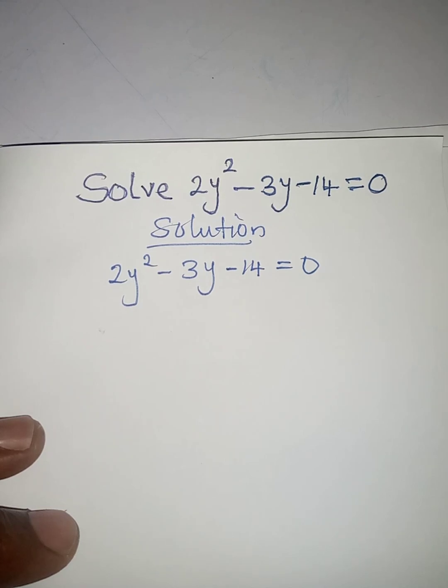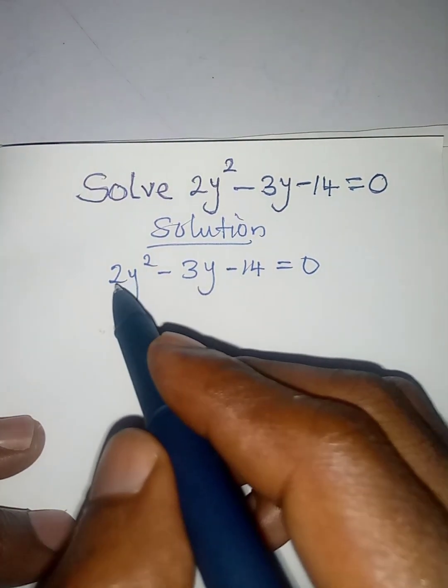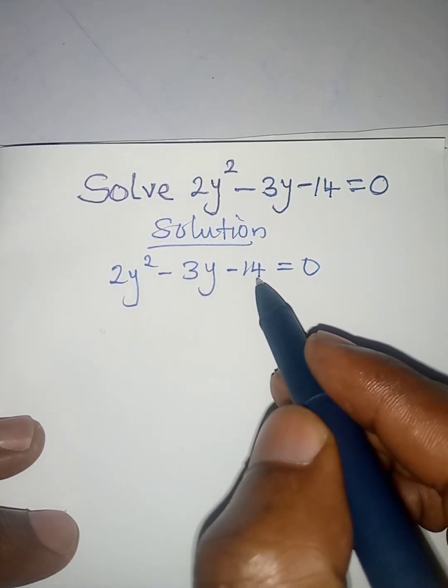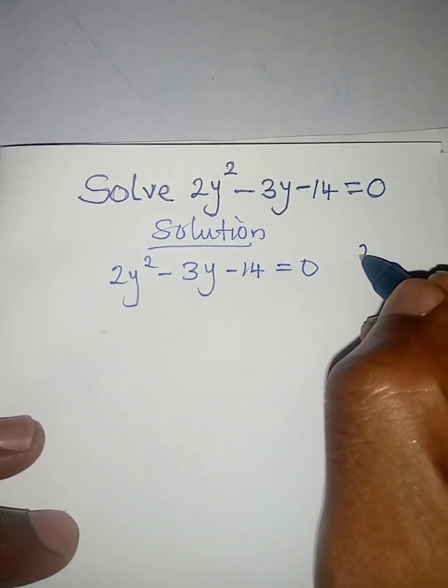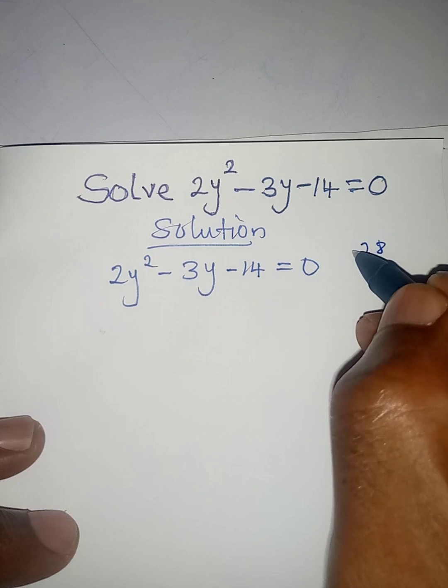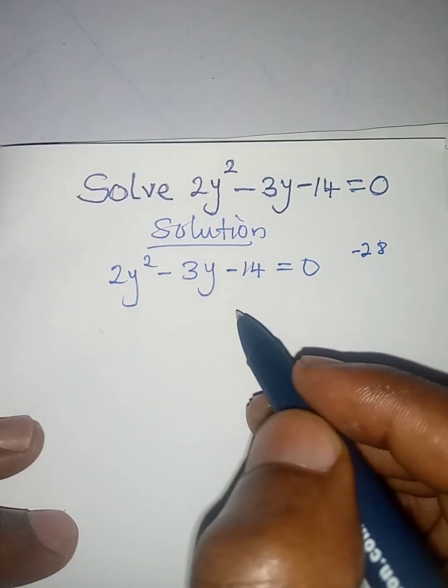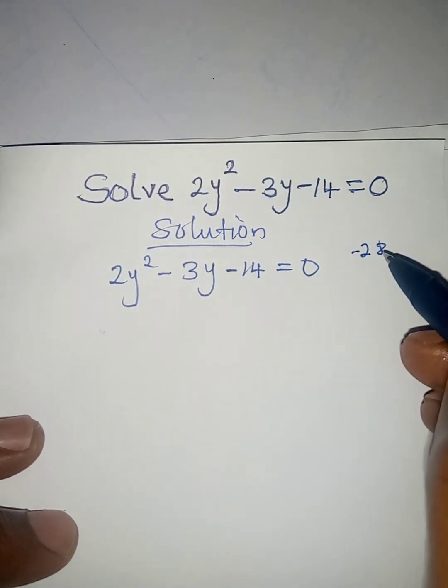so that you can know the factors. It's going to be 2 multiplied by 14, and that will give us 28. But we know it's minus 28 because of this negative 14. So the question now